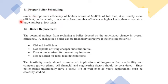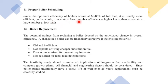The eleventh point is proper boiler scheduling. Since optimum boiler efficiency occurs at 65–85% of full load, it is more efficient to operate fewer boilers at higher load than to operate a large number of boilers at low load. For example, instead of running multiple boilers at 25–35% load each, you should consolidate and run one or two boilers at 65–85% load, keeping the rest on standby.